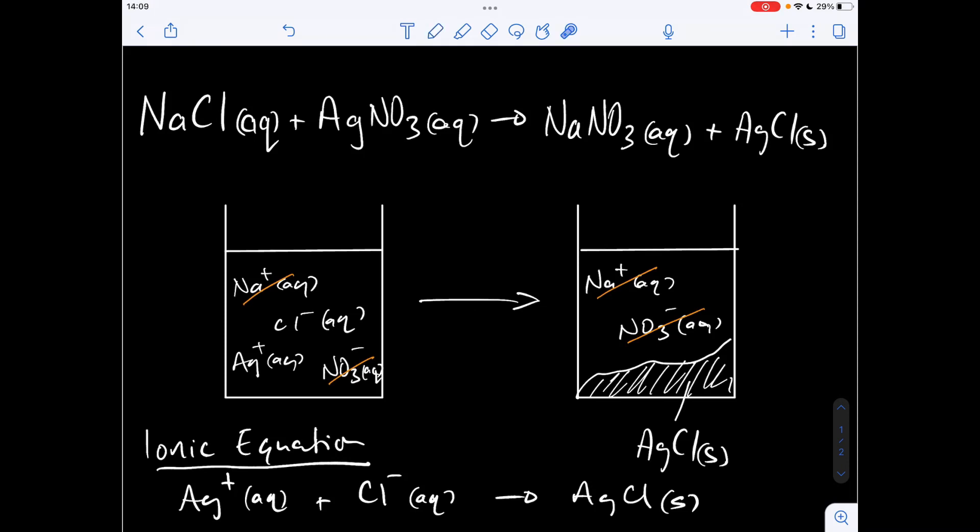The other thing to mention at this point is the special name that we give to the ions that we've cancelled out, the ones that don't change. These are known as spectator ions.